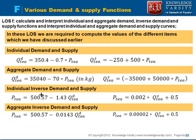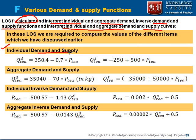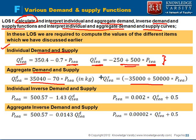The next learning objective asks us to calculate and interpret individual and aggregate demand, inverse demand and supply curves. As a recap: individual demand — quantity demanded is a function of price; individual supply — quantity supplied is a function of price. For aggregate demand, multiply individual demand by the number of customers; for aggregate supply, multiply by the number of suppliers.